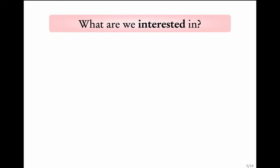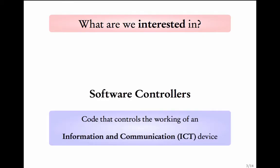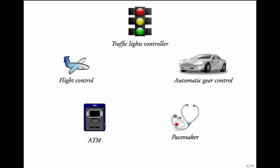What are we interested in in this course? We are interested in the code that controls the working of an information and communication device. Let me give you some examples. Let us start with an ATM. The working of an ATM is controlled by a program that listens to various inputs given by the user. It then performs some internal manipulations and generates an output action — for instance, to display the balance or give out cash.